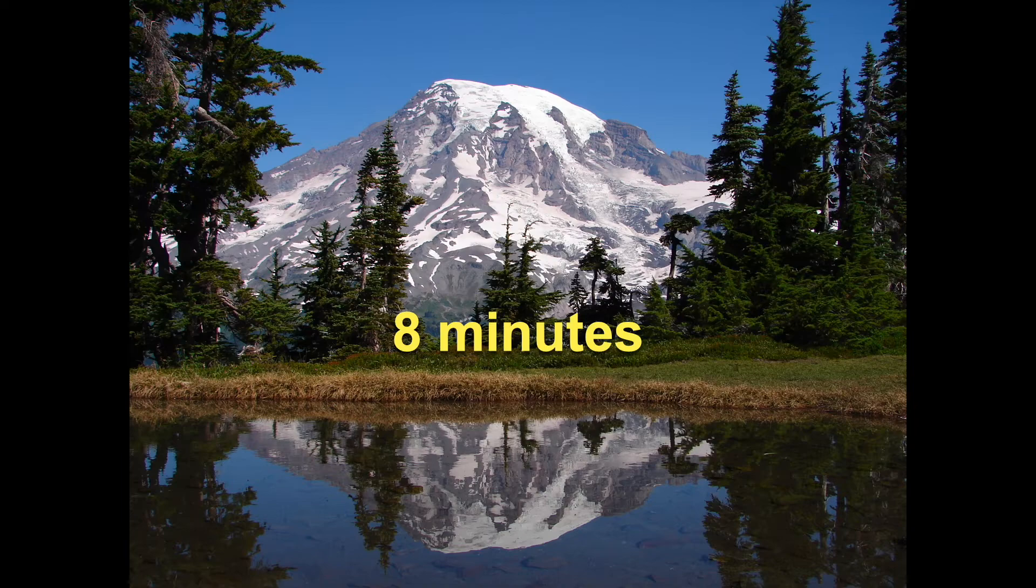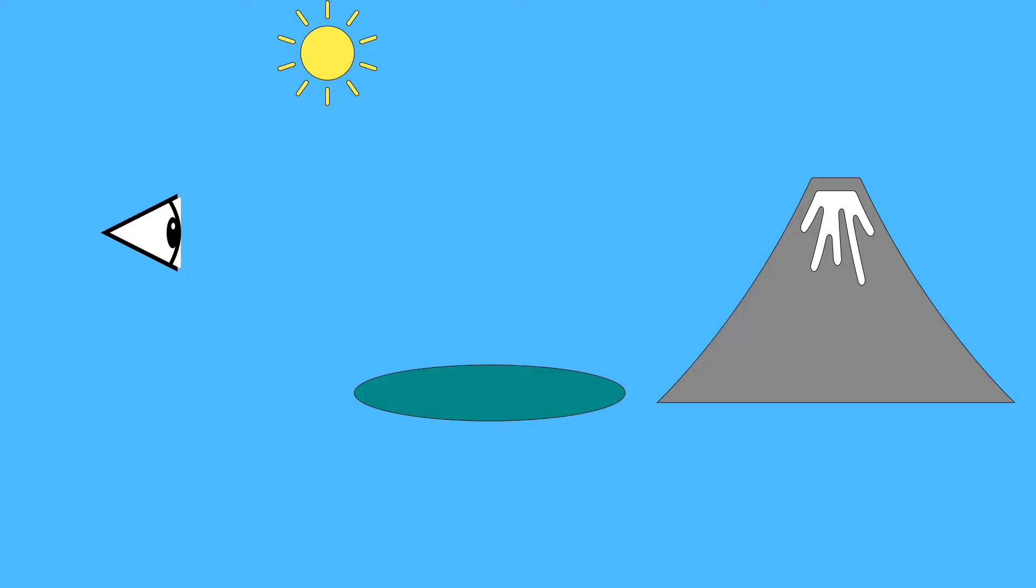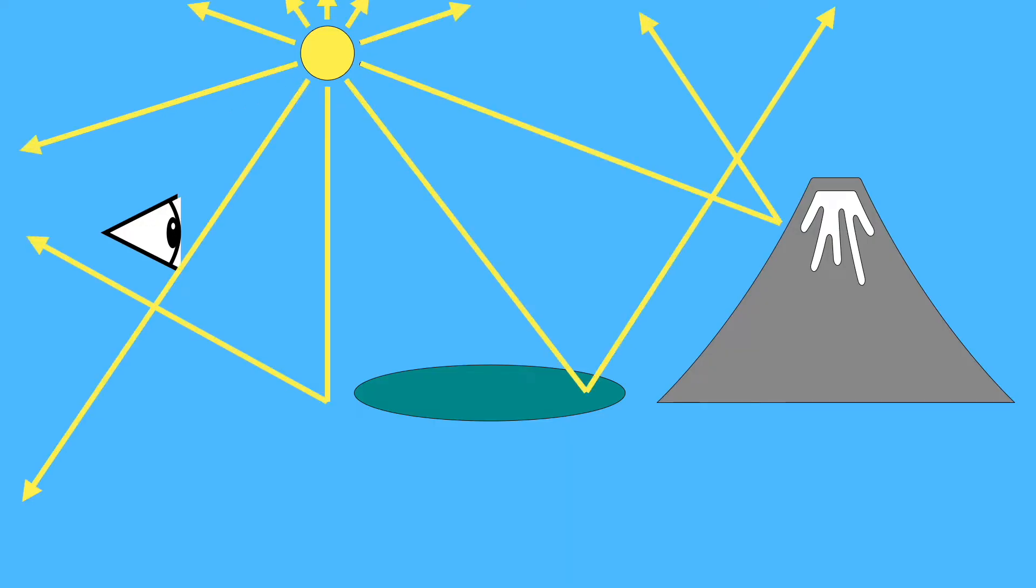Now suppose we wanted to produce an image like this using computer graphics. We can simulate a Sun that sends out lots of photons and trace the path of each one as it moves through space, bouncing off objects like mountains and lakes.